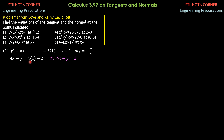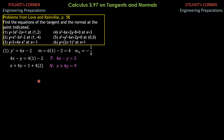Therefore the equation of the tangent is 4x minus y equals 2. For the normal: x plus 4y equals x1 plus 4 times y1, which is 1 plus 4 times 2. So x plus 4y equals 9. That's for number 1.